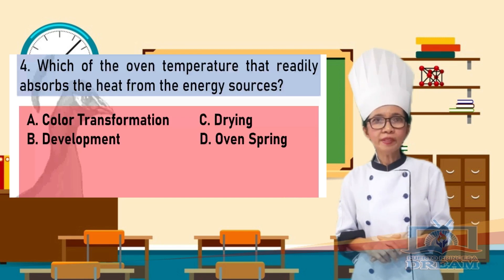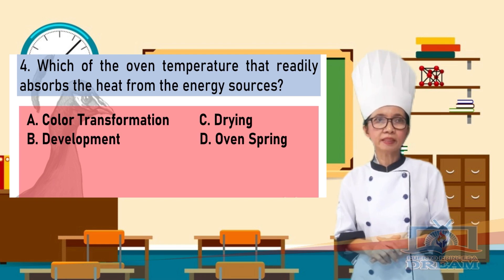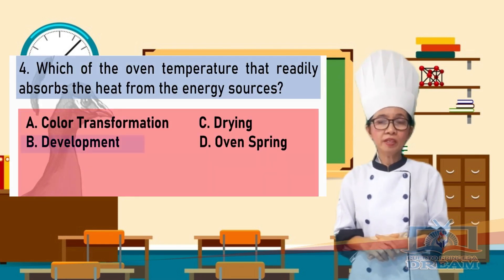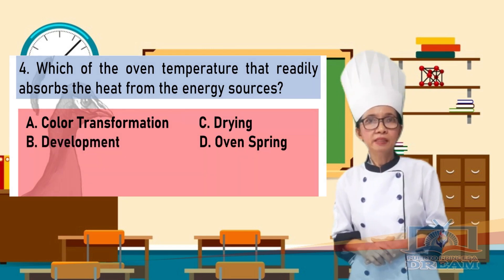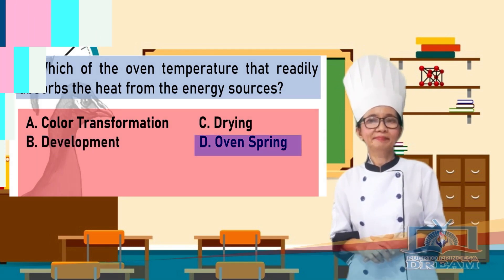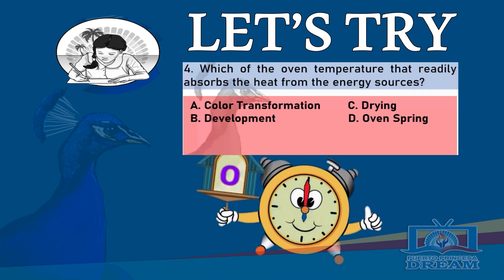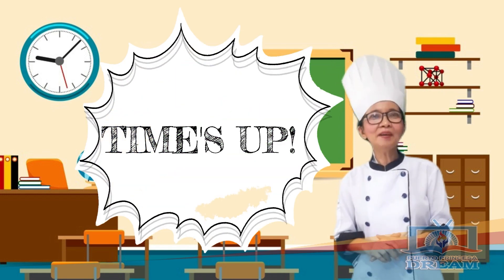Which of the oven temperature stages describes what readily absorbs the heat from the energy sources? A. Color transformation, B. Development, C. Drying, D. Oven. Time is up!